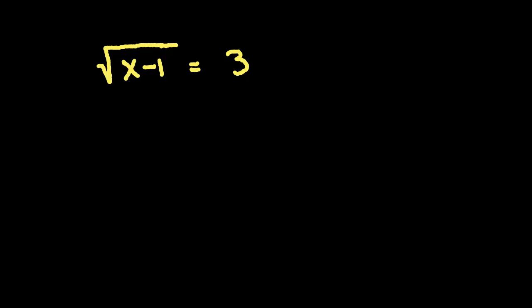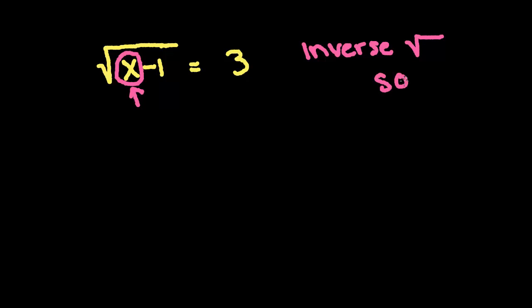So if you have a square root over your x, remember you're trying to get to an x and it's under a square root. So you need to do the inverse operation — you'll hear me talk about inverse operations all the time. The inverse of a square root is to square. So in order to get this x out from underneath this square root, we're going to have to square both sides.